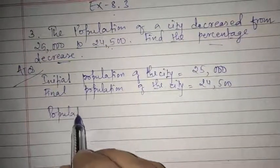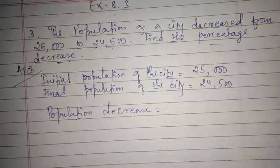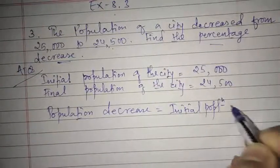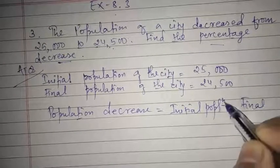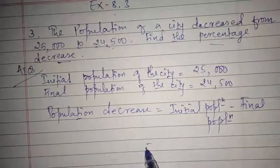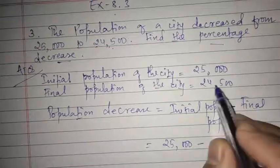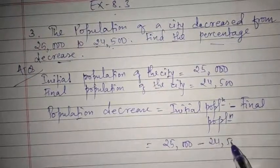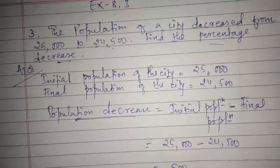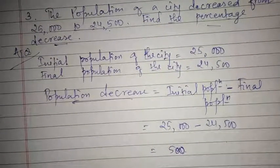The method to find the population decrease is: initial minus final. Initial population is 25,000 and final is 24,500. When you subtract, you get the population decrease, which is 500. So the number of population decreased in that city is 500.